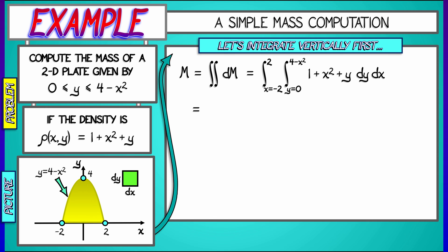Now, integrating that expression, that integrand, with respect to y gives us y plus y times x squared plus y squared over 2. Then we evaluate that as y goes from 0 to 4 minus x squared and integrate the whole thing as x goes from negative 2 to positive 2.